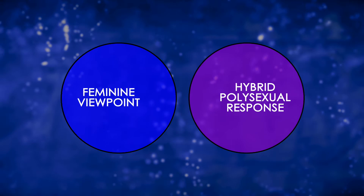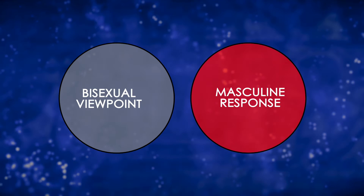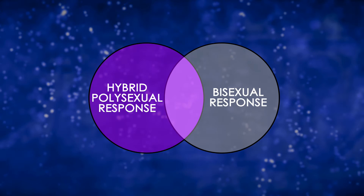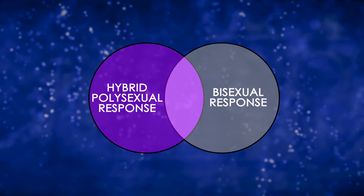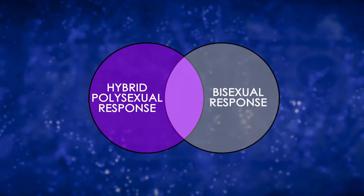Any of the gender combinations we have considered can be altered by the substitution of hybrid or team gender. For example, someone might have a feminine viewpoint but have a hybrid response, or have a bisexual viewpoint and a masculine response, or even a hybrid viewpoint and a bisexual response. Note that the gender associated with our viewpoint affects our sexual orientation differently than does the gender associated with our response — the subject discussed in my video, 32 Sexual Orientations.